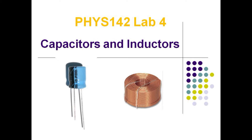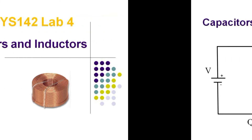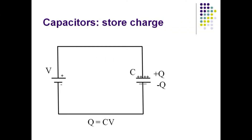This lab deals with the time characteristics of capacitors and inductors. A capacitor is a device for storing charge for later use. The amount of charge stored depends on the capacitance, C, and the applied voltage, V. Charge equals the product of capacitance and voltage — that is, Q equals C times V.